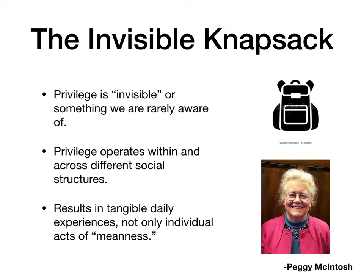First, we'll talk about the invisible knapsack. Dr. Peggy McIntosh was an important feminist theorist who did a lot of work around the idea of race. She was interested in understanding the unequal experiences between herself and her colleagues who identified as women of color — even though they were both women in similar positions at a similar institution. She wrote an essay listing over 45 different simple ways that privilege operated in her daily life, from seeing herself represented in the media to having people not judge her based on her race or skin color.